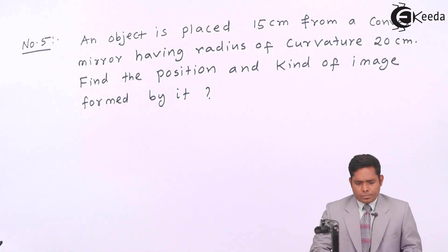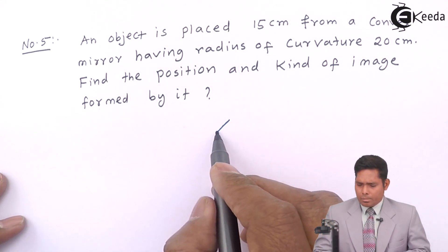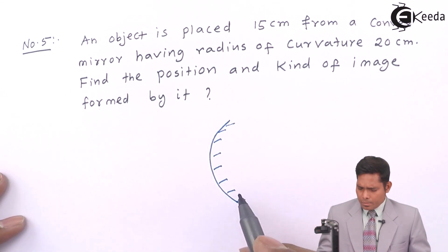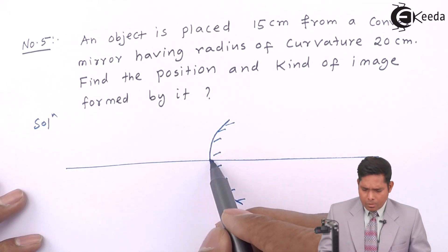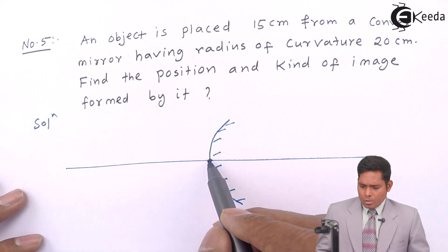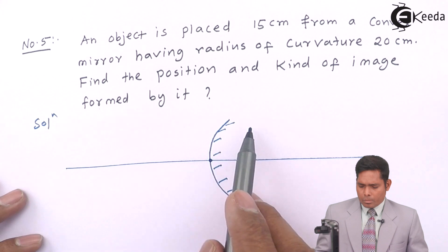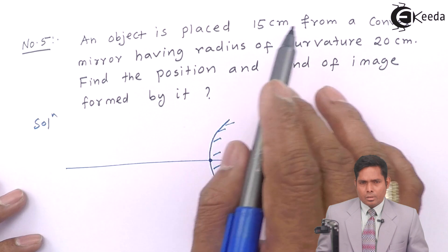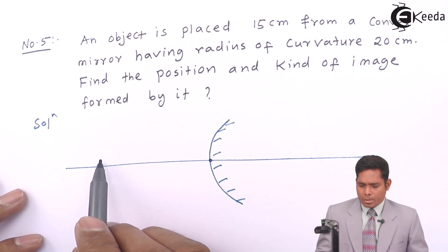So this is the question. We have a convex mirror. I will just draw a convex mirror like this. This is the center, called the pole of the mirror. The ray is supposed to come from this side towards the mirror. The object is placed 15 cm from the convex mirror.